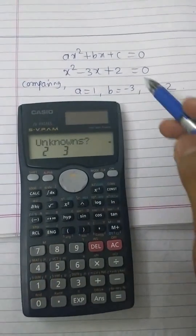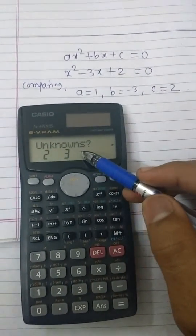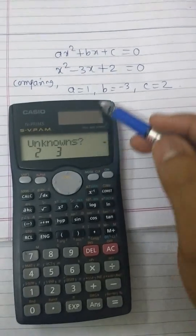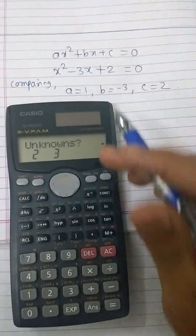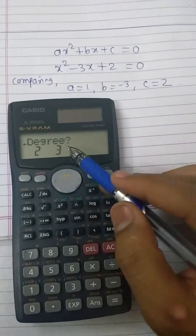After pressing one button, we will see unknown question mark two or three. But we are interested in choosing the degree. To choose the degree, scroll on right, then we will see degree question mark two or three.